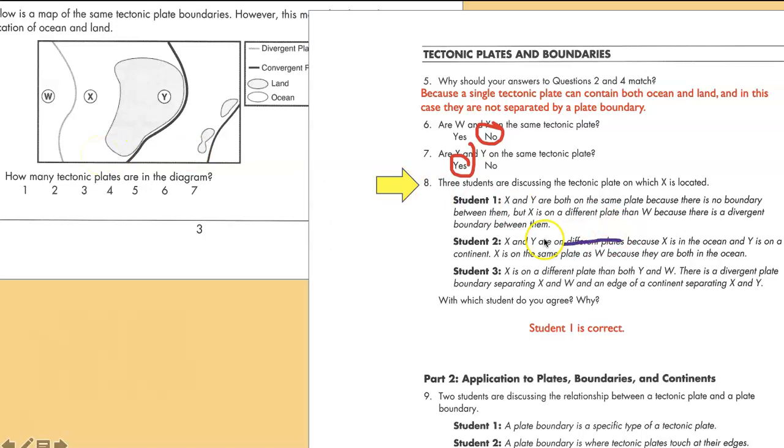X and Y are not on different plates just because X is in the ocean and Y is on the continent. So remember, the plates are not just about the continents. X is on a different plate than W but not Y. And yes, X and Y are separated by the edge of a continent, but again that is different from a plate boundary.